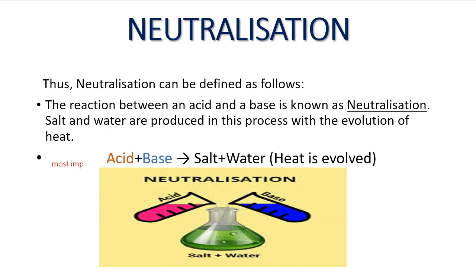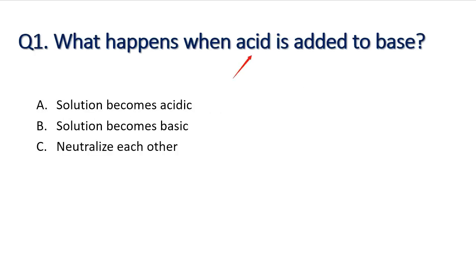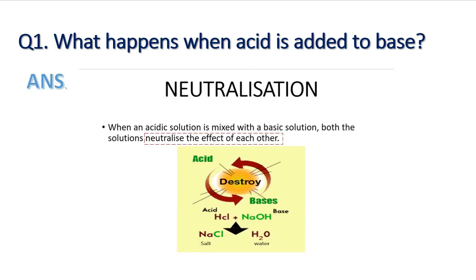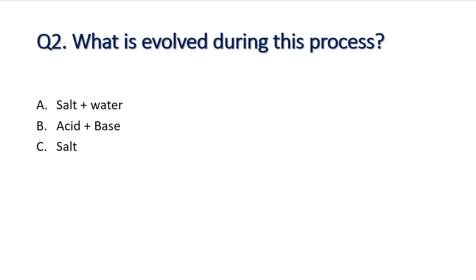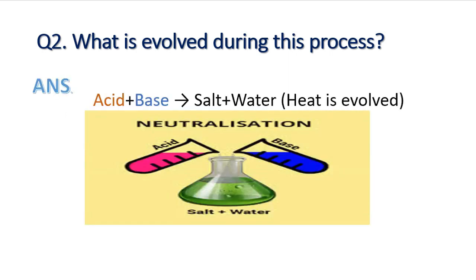Let me ask you a question — what happens when an acid is added to a base? The answer is: they neutralize the effect of each other. Next question — what is evolved during the neutralization process? The correct answer is: salt and water are produced and heat is evolved.